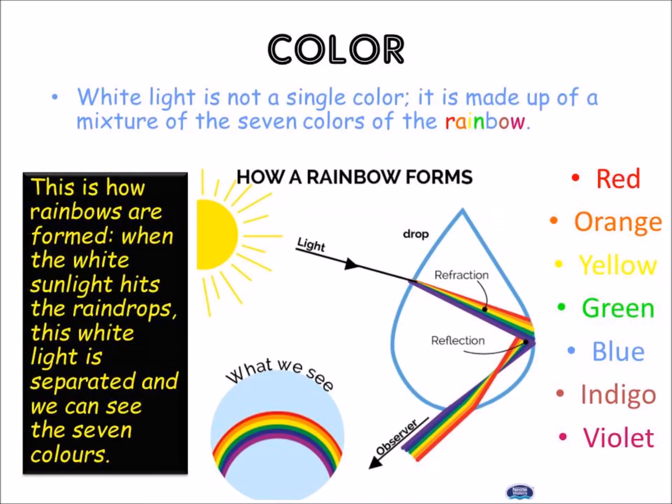Finally, we are going to learn about color. White light is not a single color — it is made up of a mixture of the seven colors of the rainbow: red, orange, yellow, green, blue, indigo, and violet. When white sunlight hits raindrops, this white light is separated into the different colors. That's the reason why we can see the seven colors of the rainbow.